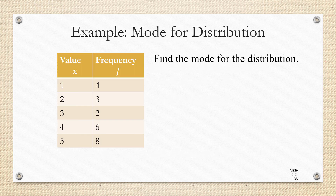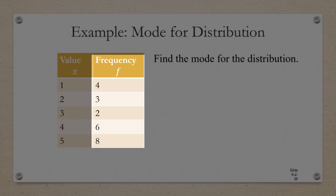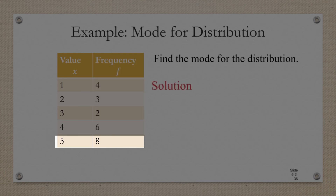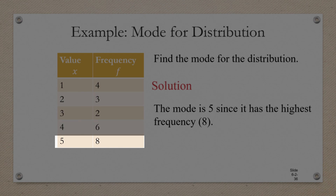You can also quite easily find the mode for a frequency distribution. In fact, this might be the easiest question on the test. All you have to do is look through the number of times each data value appears in the set, which is listed as its frequency. You can see that eight is the largest frequency, so that means that five is the mode.